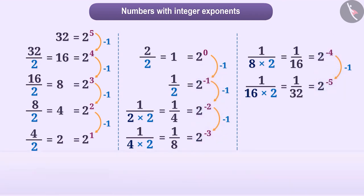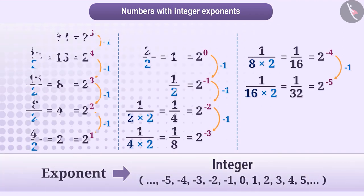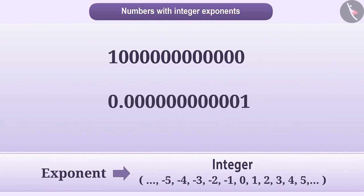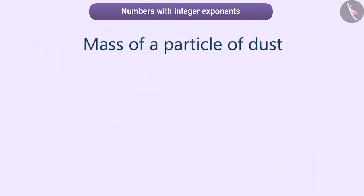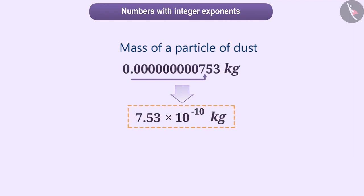That is, the exponent of numbers can be an integer. Using integer exponents, we can express very large numbers as well as very small numbers in exponential form. For example, the mass of a small particle of dust can be expressed easily by shifting the decimal point 10 places to the right, that is, 7.53 into 10 to the power minus 10.